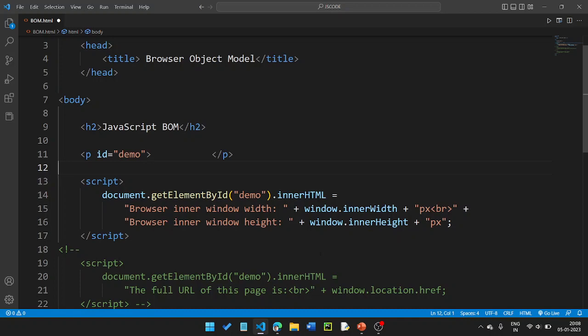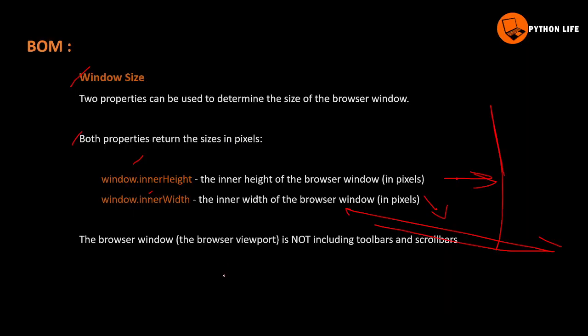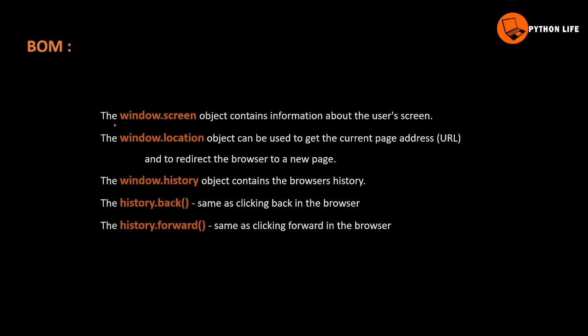So those are innerWidth and innerHeight. Next, let's look at other window properties.